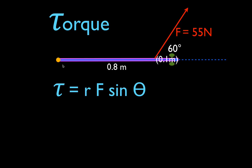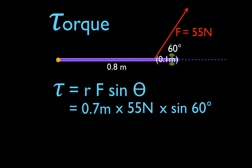What is R? R is the straight line distance from the axis of rotation to the point of application of the force. In this case it's not 0.8 — it's 0.7. The force is 55. The sine of theta — theta is the angle between the radial vector and the force vector, which is this angle, not the other one. That is the sine of 60. We calculate the torque, and the torque has a magnitude of 33 meter-newtons. This force would cause the door to rotate in the counterclockwise direction, so it's positive, and again the torque vector points out of the board.